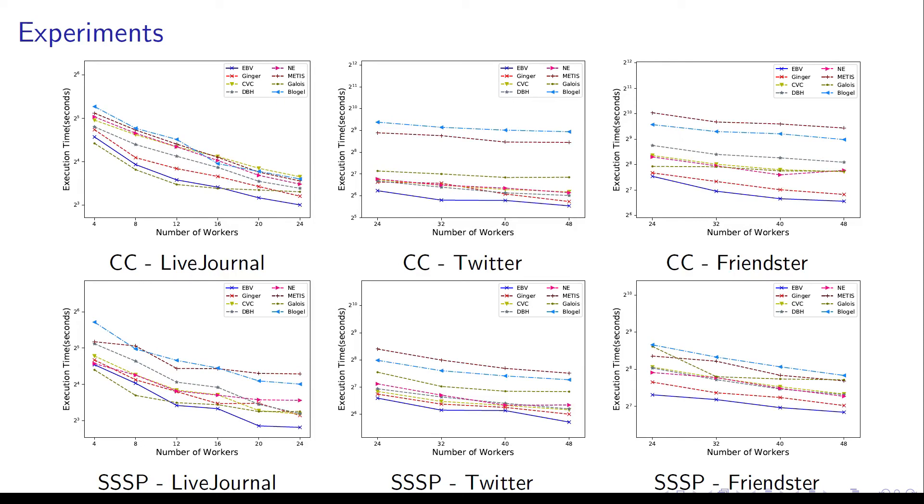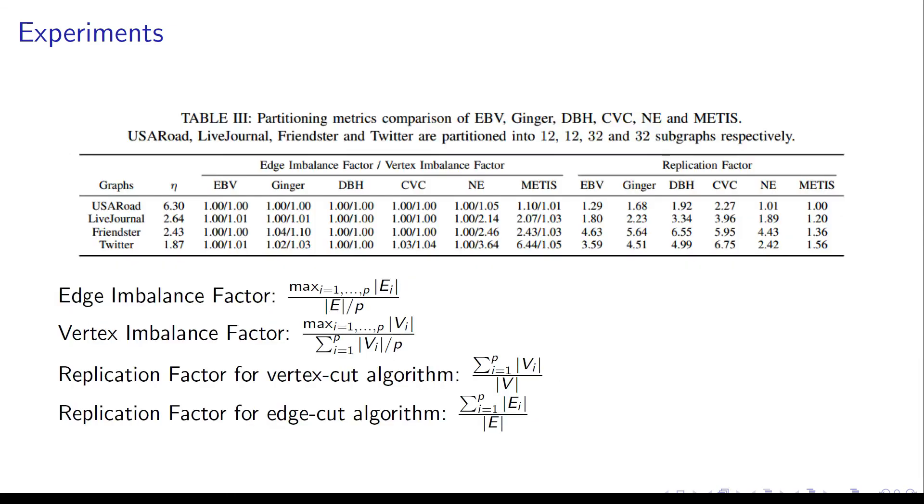We can find that our EBV algorithm outperforms others in most cases. Further, we investigate the imbalance factor and replication factor of each partition algorithm. The imbalance factor measures the balance of edges and vertices. And the replication factor is the ratio of replicated vertices or edges made by partition.